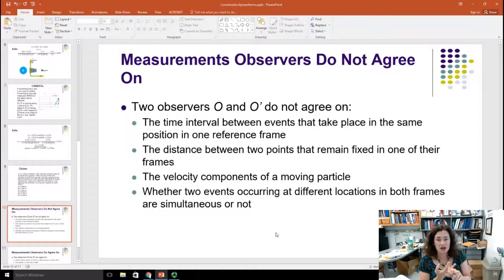The velocity components of a moving particle, that's what we talked about today. And whether two events occurring at different locations in both frames are simultaneous or not. And that's the problem of the lack of simultaneity.